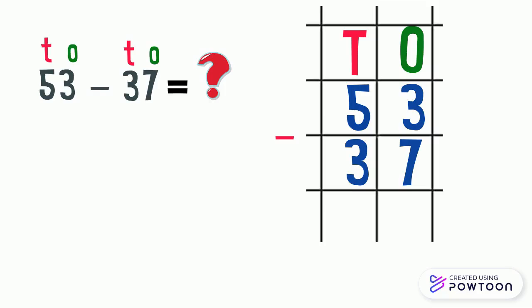So we should borrow one ten from the tens column and regroup it to ten ones. We cross out five and write four, and we put the one next to the three. We get thirteen ones.